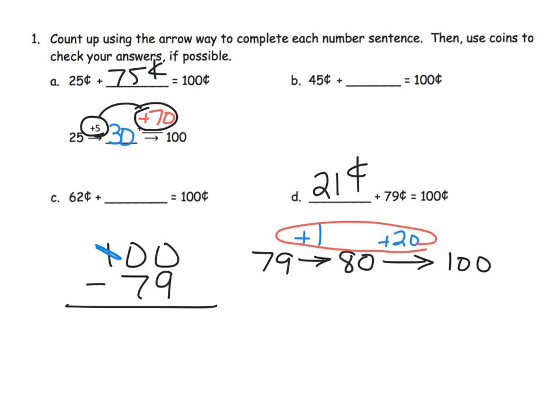We're going to exchange that hundred for ten tens, then exchange one of those tens for ten ones. Now we can subtract ten ones minus nine ones is one, and nine tens take away seven tens is two tens, so we get 21, which is exactly what we knew all along.